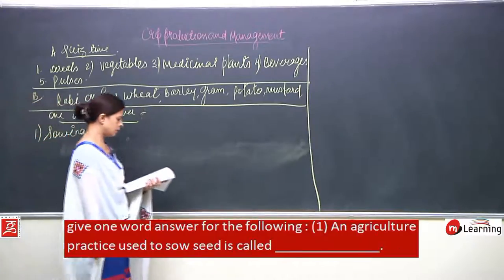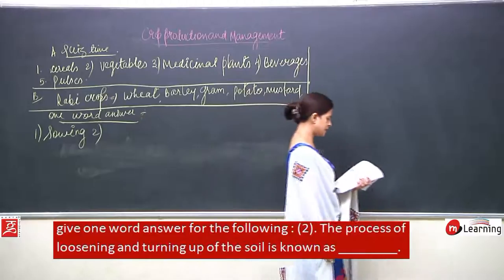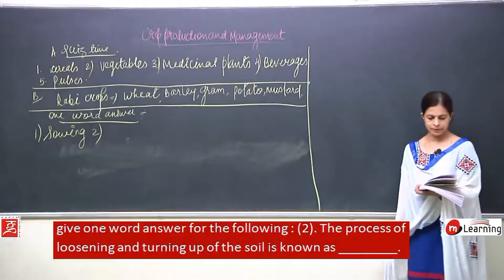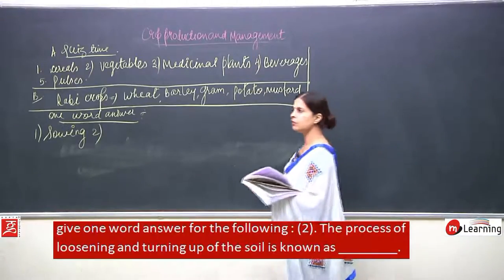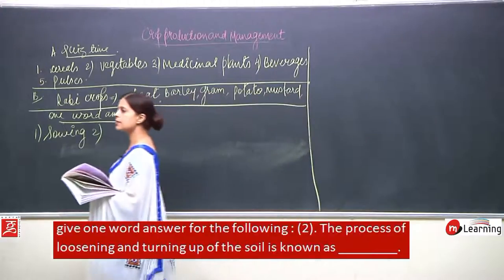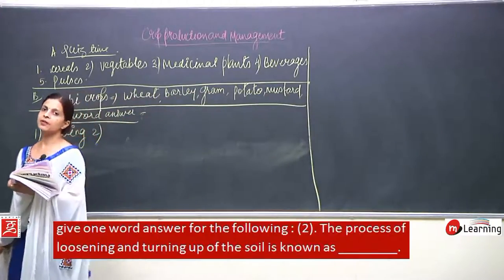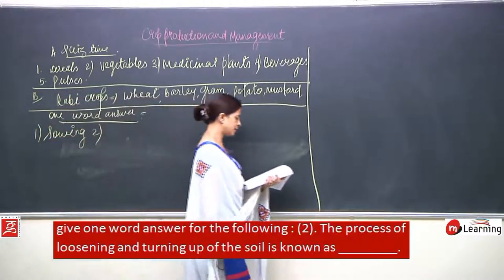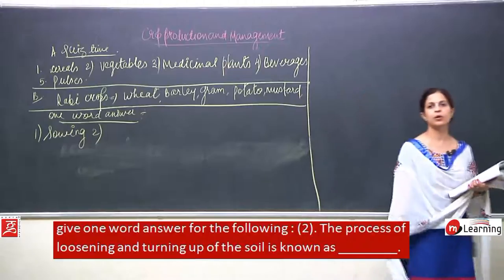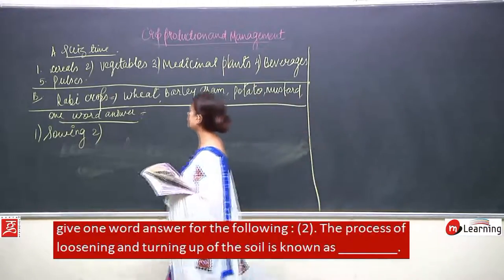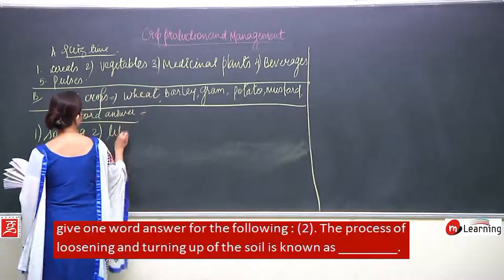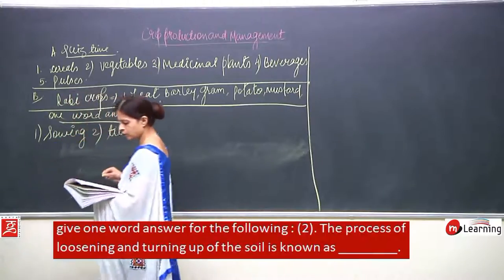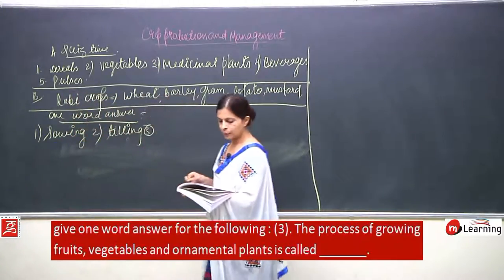Number 2: the process of loosening and turning up of the soil is known as tilling. This should be very clear in your mind — as soon as this sentence is read, the word should come to your mind.